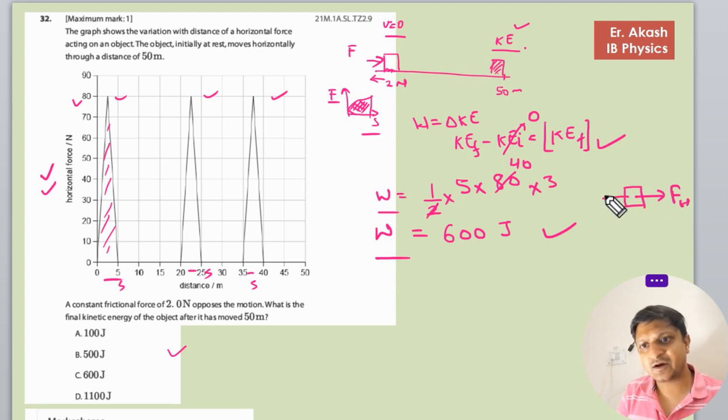And now there is a force of friction. Now we will find the work done by the frictional force. Work done by frictional force: force into distance. Frictional force is 2 newtons and distance is 50, so it becomes 100 joules.